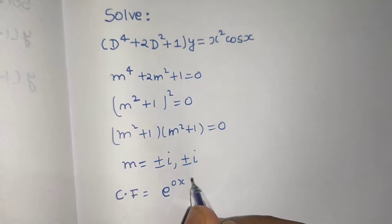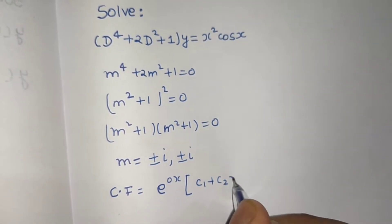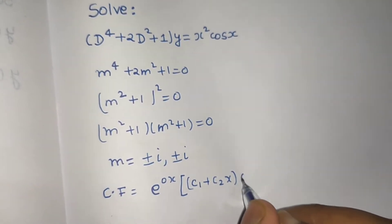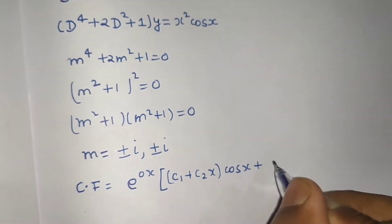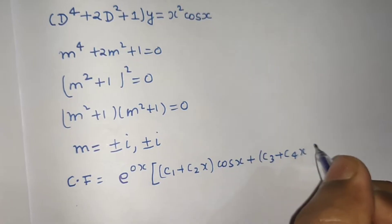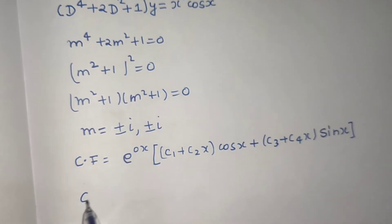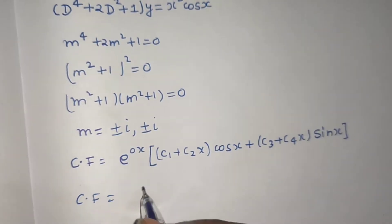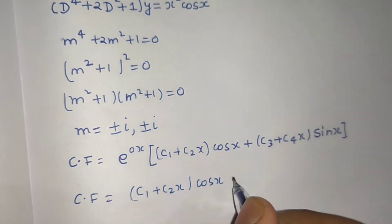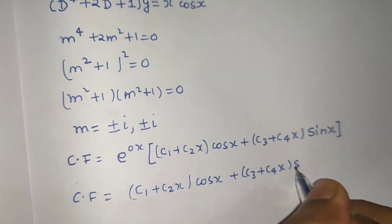So e^(0x) gives us (c₁ + c₂x)·cos(bx), where b = 1, so cos(x); plus (c₃ + c₄x)·sin(bx), where b = 1 again, giving sin(x). The simplified complementary function is: (c₁ + c₂x)cos x + (c₃ + c₄x)sin x.